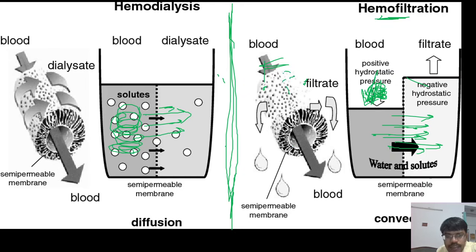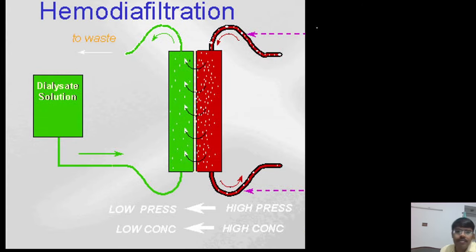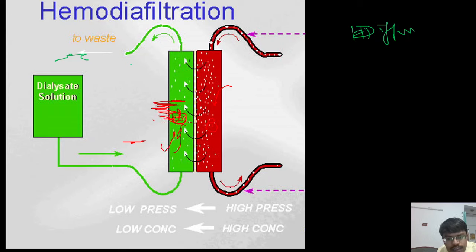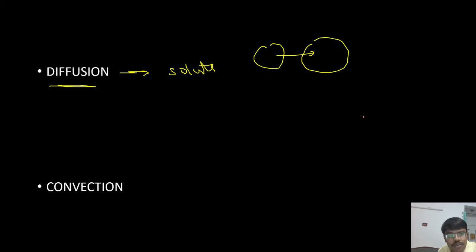If we combine both modalities — diffusion and convection — we get hemodiafiltration. In this setup, dialysate circulates on one side of the membrane, enabling diffusion. Additional pressure is applied so that fluid is pushed out, enabling convection — filtration — as well. This combination of dialysis and filtration in a single filter is called hemodiafiltration. The concept of diffusion occurring in dialysis and convection occurring in hemofiltration is the foundation for understanding all CRRT modalities.